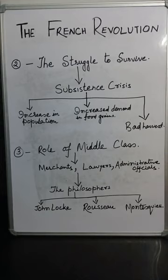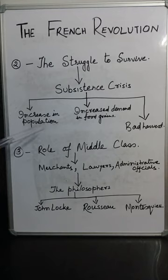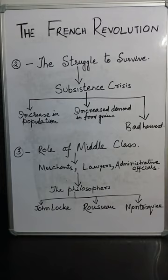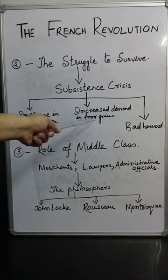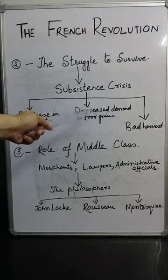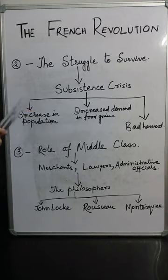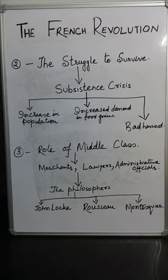In France there was a subsistence crisis during 1789. The most important reason behind this was an increase in population. The population of France increased from 23 million to 28 million by the year 1789. This huge increase in population resulted in an excessive demand for food grain, because more food was required to feed the population. The production could not keep pace with the demand, and as a result there was a subsistence crisis.